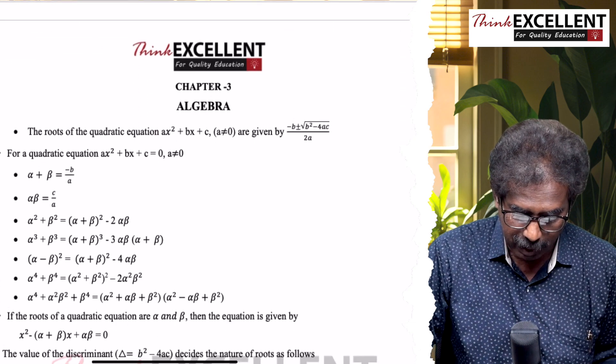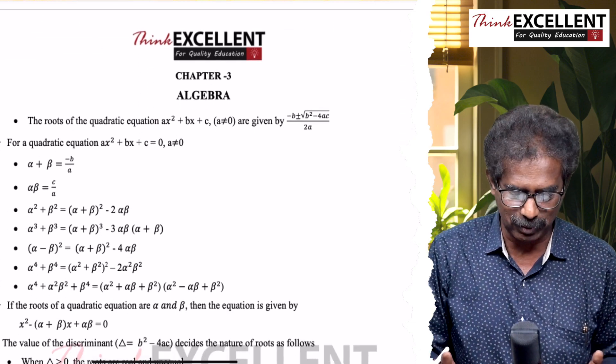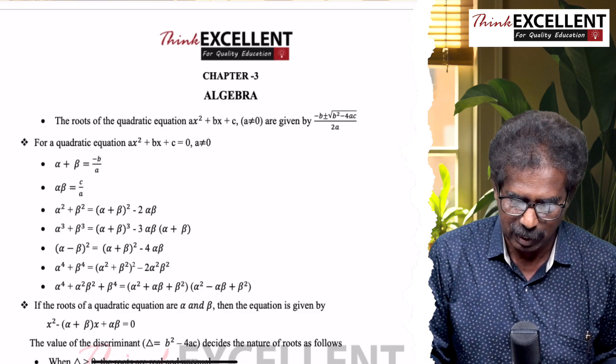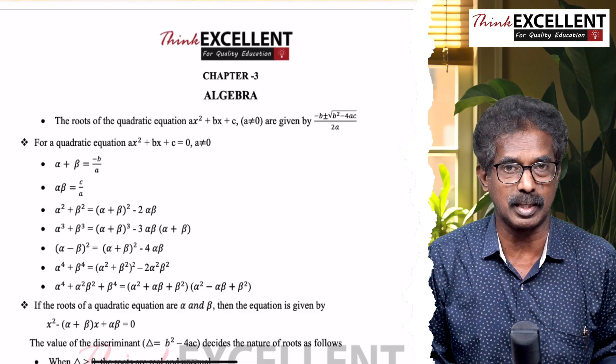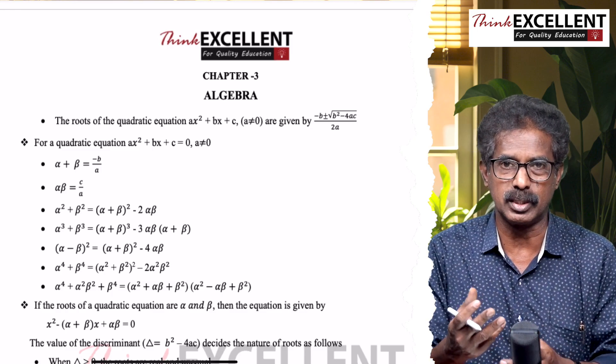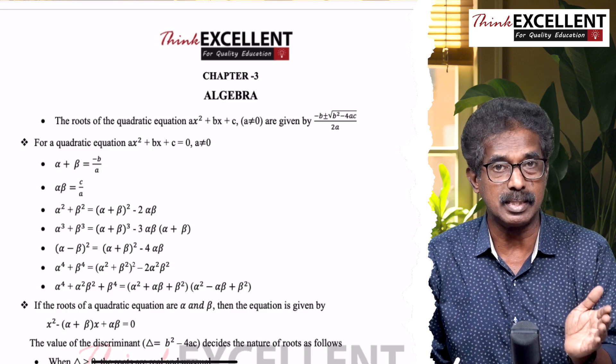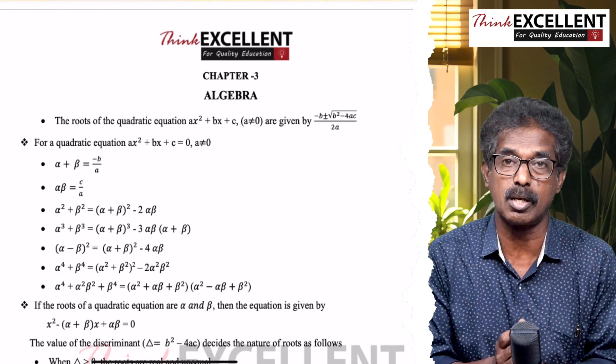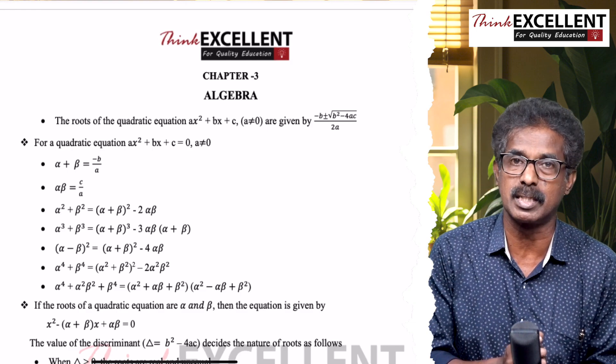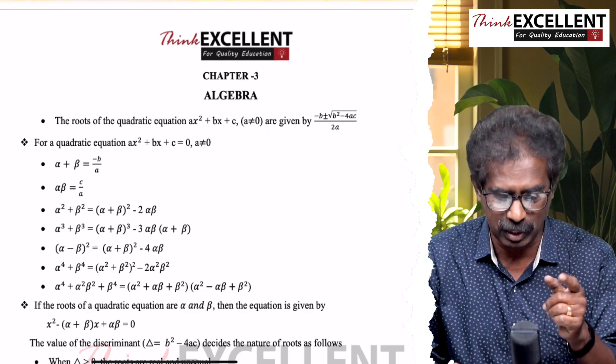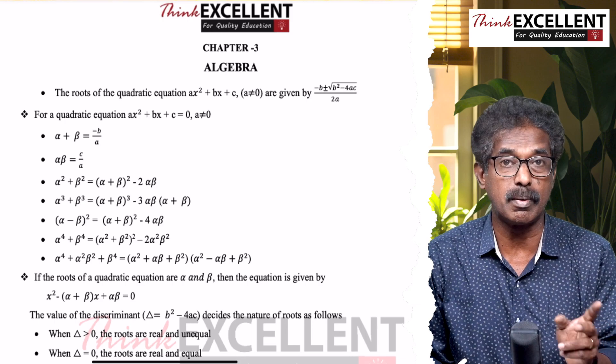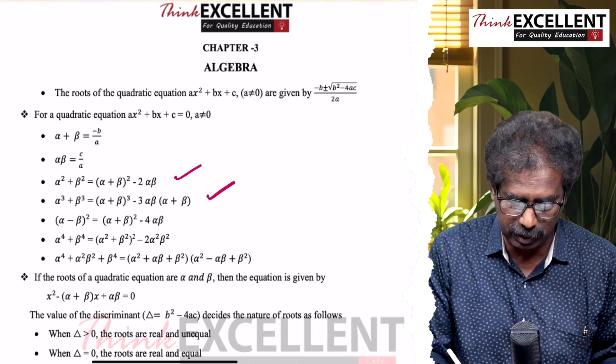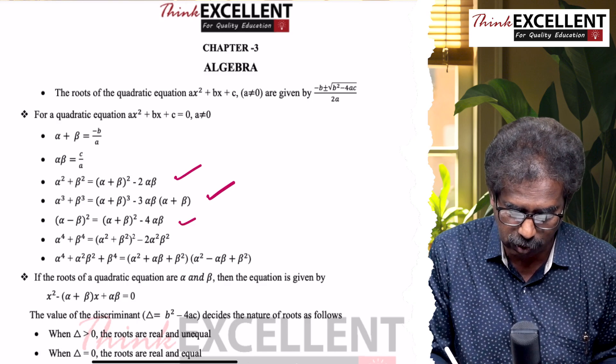Chapter number three, Algebra. Lengthy topic. Many results. First, solving simultaneous equations - you must know how to do that. Then quadratic equation. You can do factorization or factorize. LCM into HCF is equal to product of two polynomials. Then quadratic equation, you have to solve by formula method.